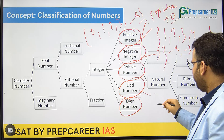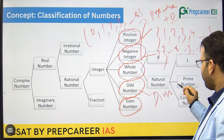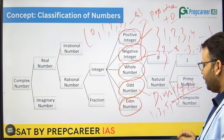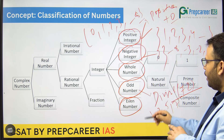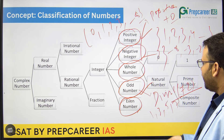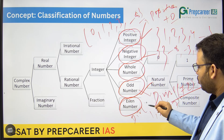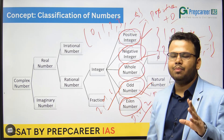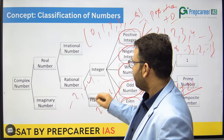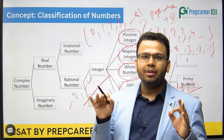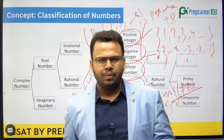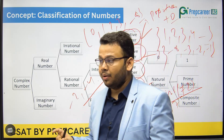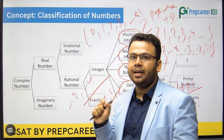What are odd numbers? Odd numbers are those which are not divisible by 2 — for example, 1, 3, 5, 7. What are even numbers? Even numbers are those which are divisible by 2 — for example, 2, 4, 6. One important thing to understand: odd and even numbers can be both positive and negative. For example, minus 2 and minus 4 are negative even numbers. But remember, whole numbers cannot be negative.